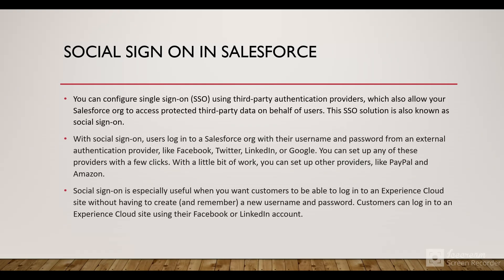So a user has to log into the Salesforce org with their username and password — they'll use an external authentication provider like Facebook, Twitter, LinkedIn, Google, Slack, etc. We can also use PayPal or Amazon as the external provider. Social sign-on is especially useful when you want your customers to log into your Experience Cloud site without having to create a new username and password. In this tutorial we are going to use Slack.